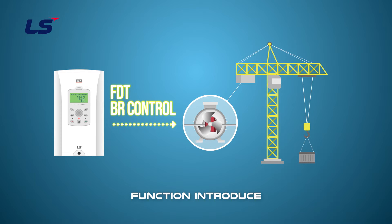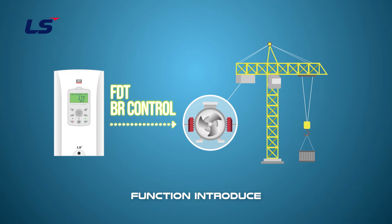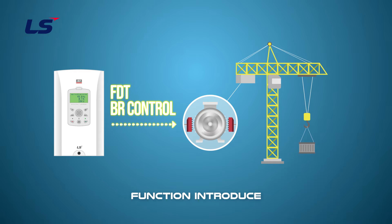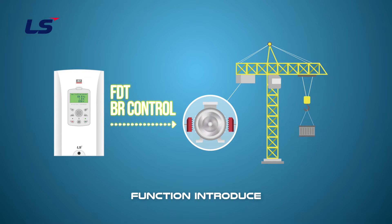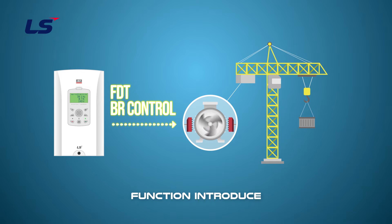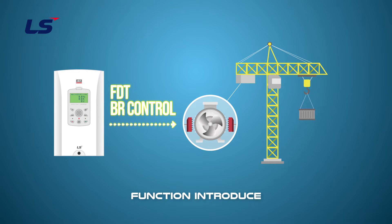The brake opening signal from the drive goes out through a terminal output signal. The operation voltage of the brake is applied through the control panel and the brake opens. Then the brake is closed when the signal from the drive is removed.